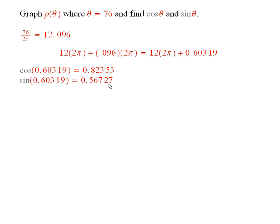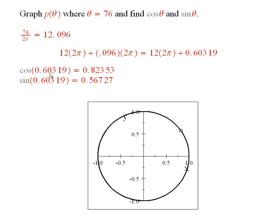And the sine of it is 0.567. So now what I want to do is plot the point on the unit circle. So when we do this, we graph this circle, and we graph this point. Here's where the point is, right here.